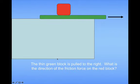This one is a little bit tricky. Let's say that the thin green block is pulled to the right, so we slide this out this way. What is the direction of the friction force on the red block? Well, if there was no friction again relative to the green block, the red block would be moving to the left, right?